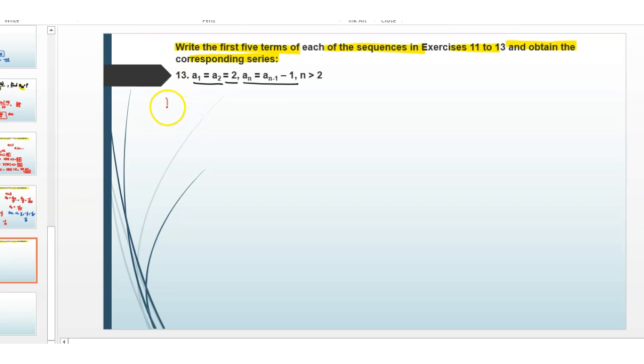We will write here a1 equals 2 and a2 equals 2. Then we have to find a3. Since a(n) equals a(n-1) minus 1, we put n equals 3 because n is greater than 2.